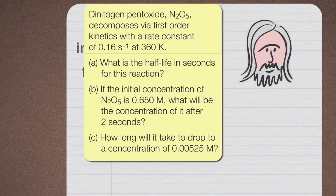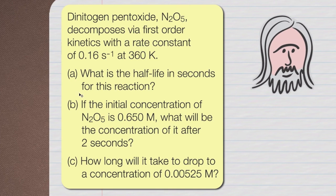The problem itself is a little three-parter here. Basically it says that dinitrogen pentoxide is going to decompose via first-order kinetics with a rate constant of 0.16. I'm going to highlight that because we're going to need that for our calculations.